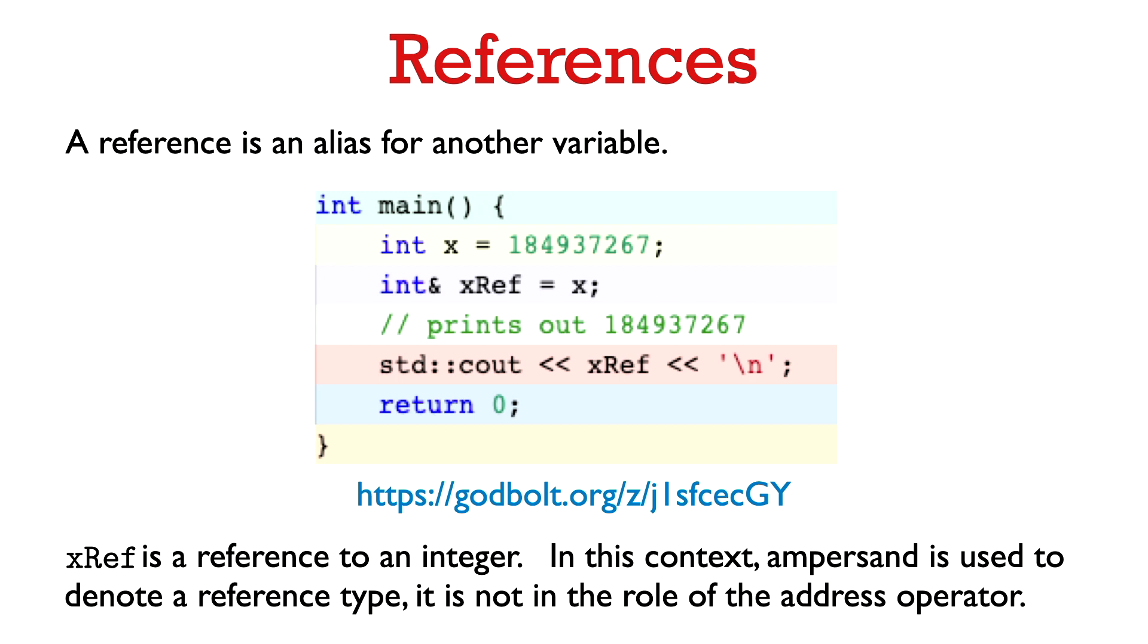So we saw with pointers that a star could play two different roles. It was the dereferencing operator and was also used to denote a pointer type in declaring a pointer variable. So it's similar with ampersand. It also can play two different roles here.